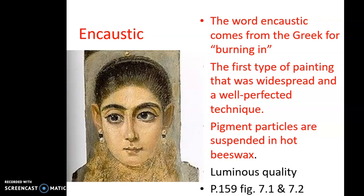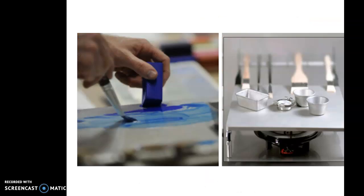Page 159, figures 7-1 and 7-2 are examples of some encaustic paintings. Here you can see how the encaustic is done. That blue block the artist holds in their left hand is the pigment in the wax. They take it onto what is essentially a hot plate — a metal surface where the paper is laid — so they can push and pull the wax around with a paintbrush.